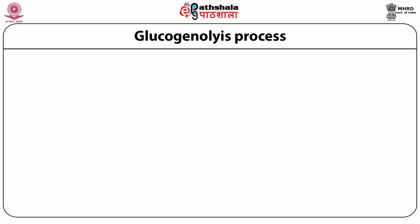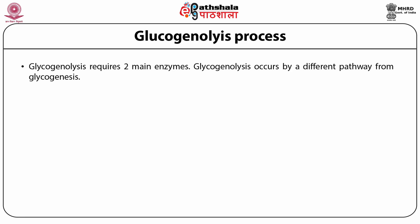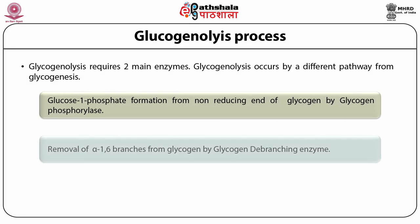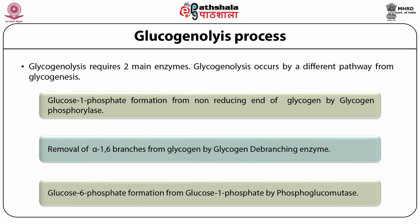Glycogenolysis requires two main enzymes and occurs by a different pathway from glycogenesis. The first step is glucose 1-phosphate formation from the non-reducing end of glycogen by glycogen phosphorylase. The second step is removal of alpha 1-6 branches from glycogen by the glycogen debranching enzyme. The third step is glucose 6-phosphate formation from glucose 1-phosphate by phosphoglucomutase.